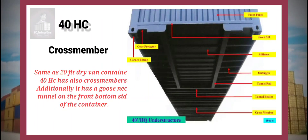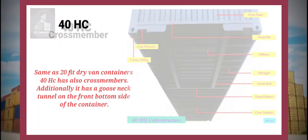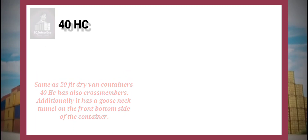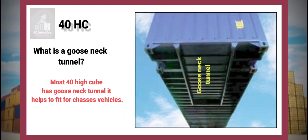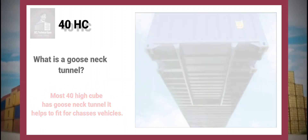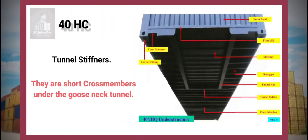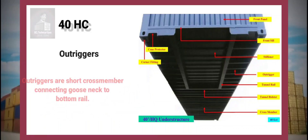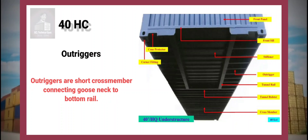Cross members: Same as 20ft dry van containers, the 40HC also has cross members. Additionally, it has a goose neck tunnel on the front bottom side of the container. Most 40HC containers have a goose neck tunnel — it helps to fit onto chassis vehicles. Tunnel stiffeners are short cross members under the goose neck tunnel. Outriggers are short cross members connecting the goose neck to the bottom rail.